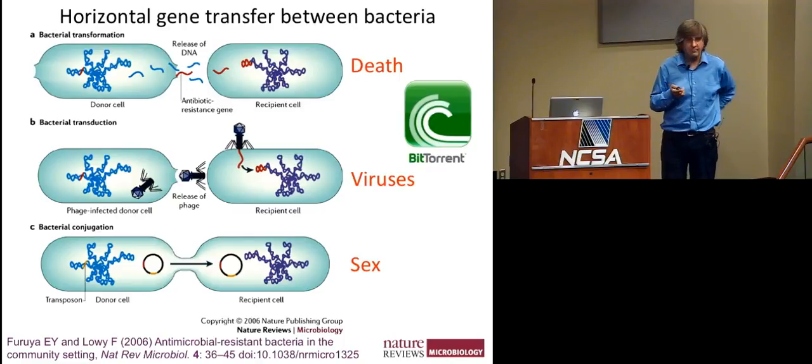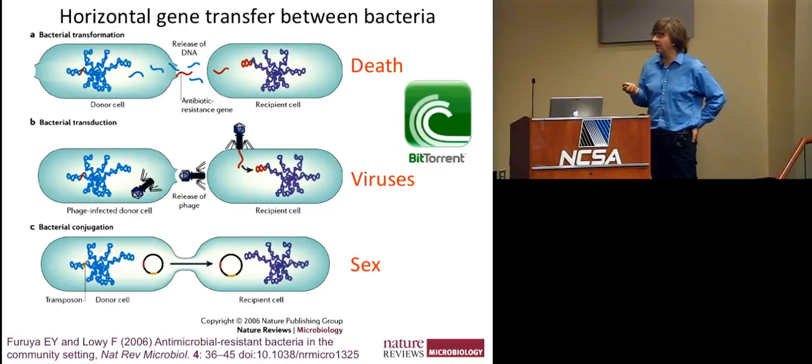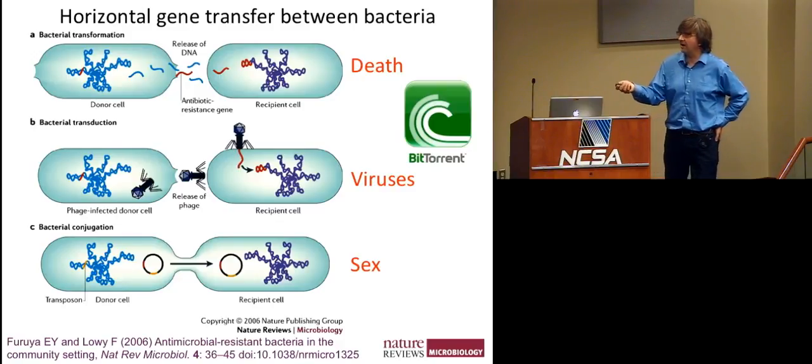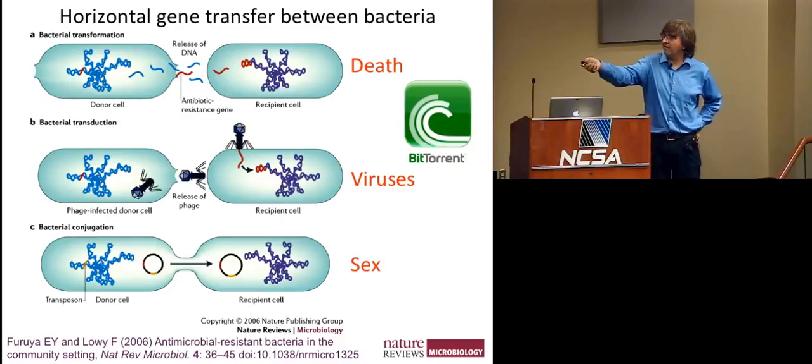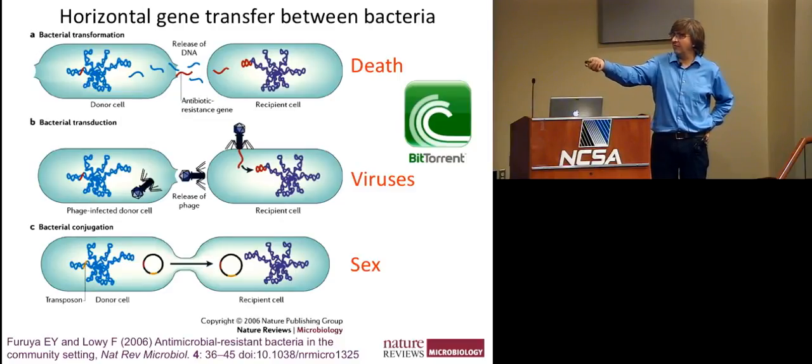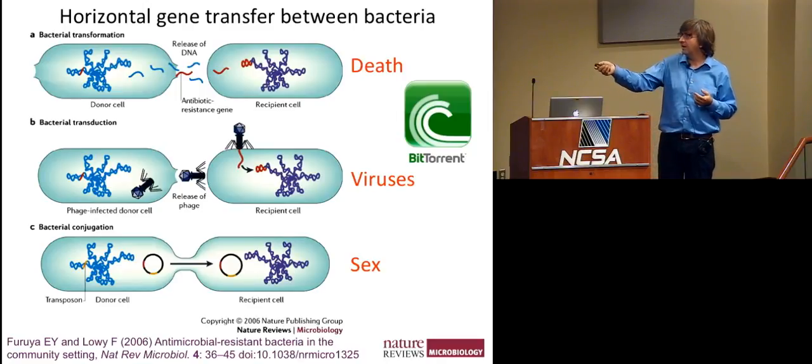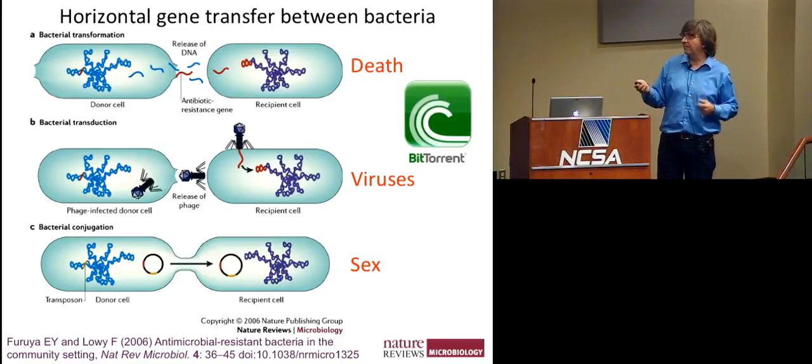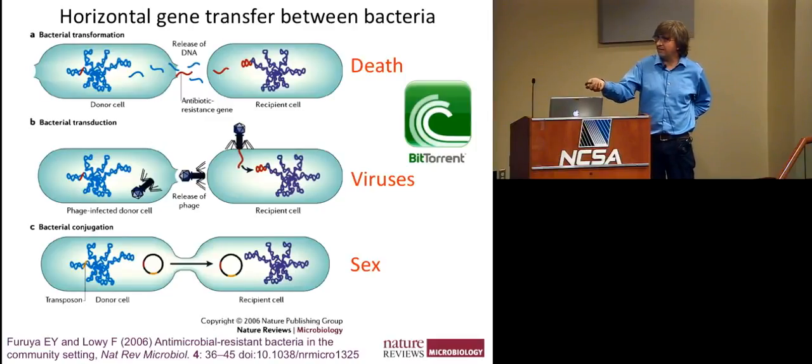And there are three basic principle mechanisms. Each of them has a biological name, which I don't want you to remember, but I will present them as deaths, sex, and viruses. A death is if a bacterial cell dies and it releases DNA, which was in the cell, to the environment. Some other cells, which are in a proper state, can absorb some bits and pieces of the genome of dead bacteria and incorporate them in their own genomes.